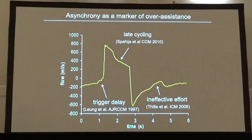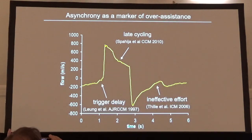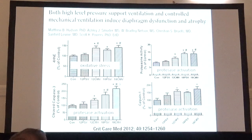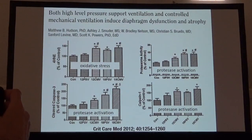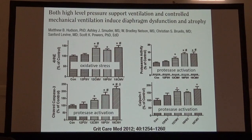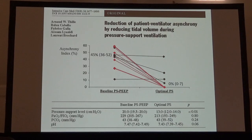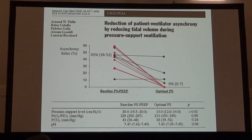On the other hand, other asynchronies such as trigger delay, late cycling, and ineffective efforts are often associated with over-assistance. We know that high levels of pressure support are very similar to fully controlled mechanical ventilation in inducing diaphragm dysfunction and atrophy. So if we detect such asynchronies on waveforms, we should suspect over-assistance and try to decrease the pressure support level, which is usually very effective in improving patient-ventilator interaction without affecting gas exchanges.